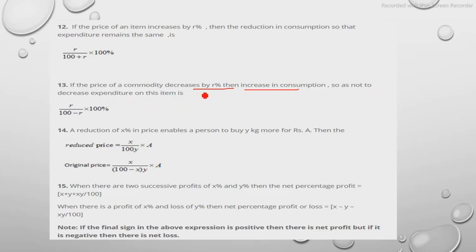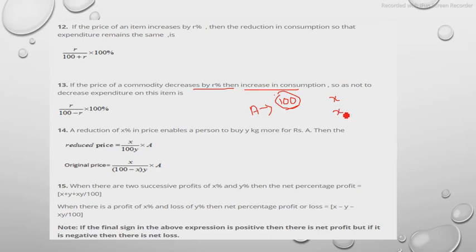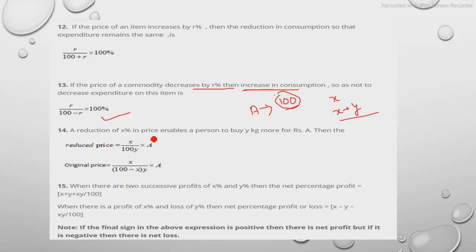For example, a family is spending 100 rupees on an item. If the price decreases, for the same 100 rupees they can now buy more. To find the increase in consumption so that expenditure remains the same, the formula is: r / (100 − r) × 100 percent.